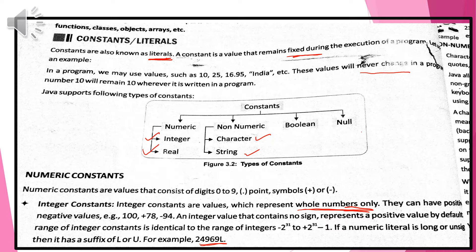Just like if I am taking a data called student mark and it is 50 always, then it is a constant. I assign the student mark as 50, then 50 is fixed — always it is having the student mark as 50. That is known as a constant. It will never change in the program.